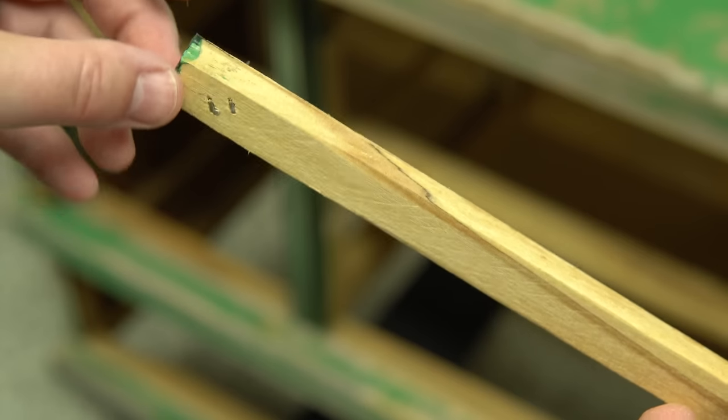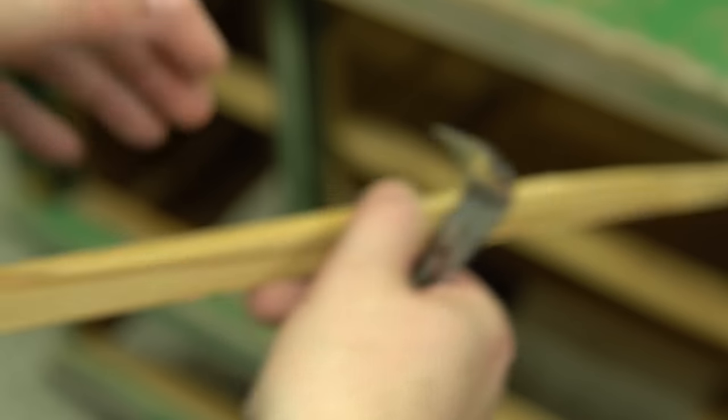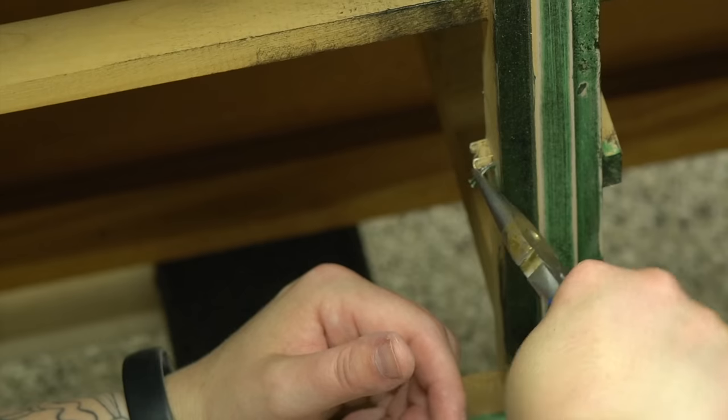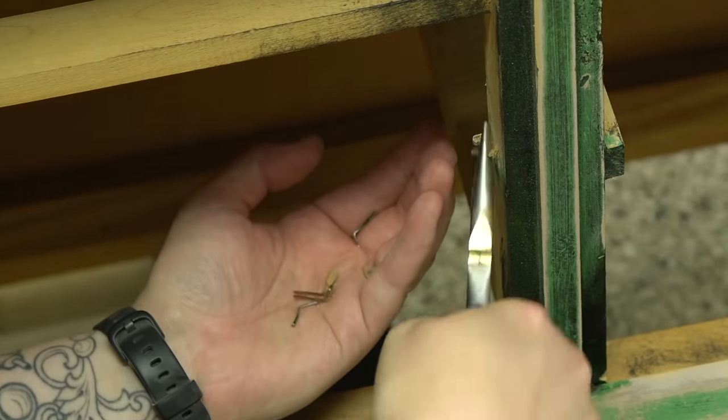Now this is one of the rails that I need to replace, you can see the profile of it here, there's a whole section on the top missing as well as on the back. Now I initially thought I only needed to make two of these, one for each side of this particular drawer, but when I was cleaning earlier I noticed that there was actually another rail that was broken so I actually have to make three of these.